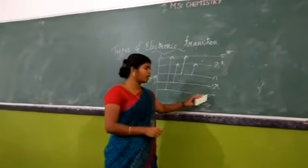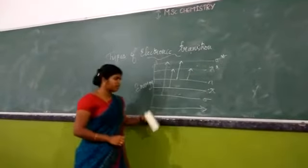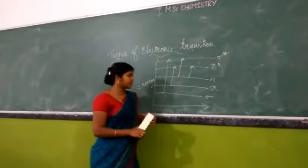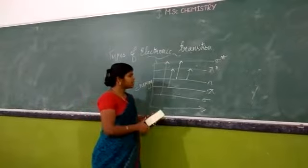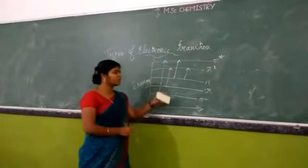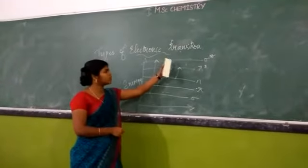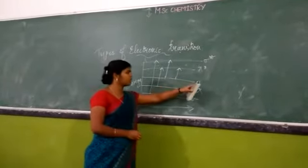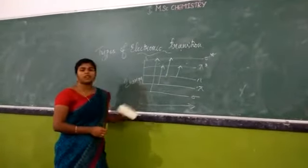Sigma and pi are bonding orbitals. The promotion of an electron from sigma to sigma star is called the sigma to sigma star transition — that is, from the bonding molecular orbital to the anti-bonding sigma star orbital. The next is pi to pi star transition, from the bonding pi orbital to the anti-bonding pi star orbital. Excitation from the non-bonding orbital to sigma star is called n to sigma star, and from non-bonding to pi star is called n to pi star transition.